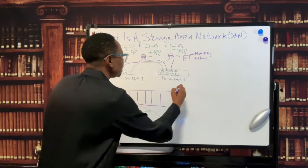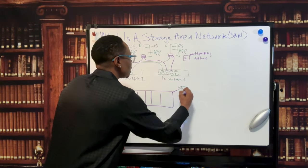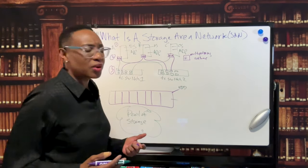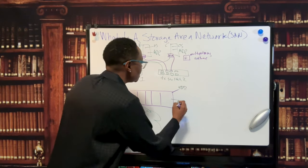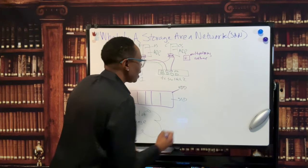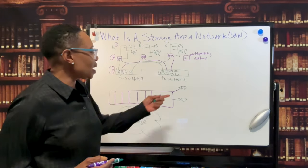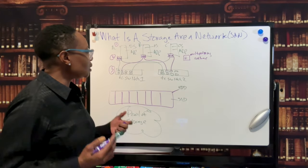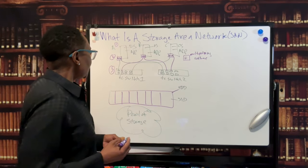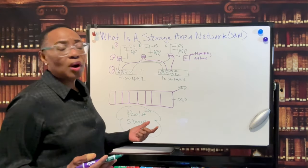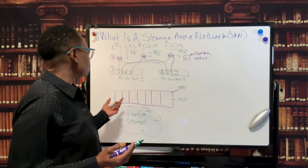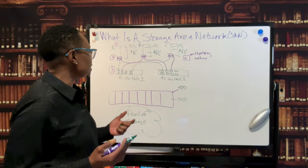And this disk array has a lot of intelligence built into it, it has a lot of redundancy built into it. It can have traditional hard drives, slower spinning disks, or solid state drives for your mission critical workloads - these are high performance, low latency disks - and it could also have a combination of both, you know, some HDDs and some SSDs in the same chassis.